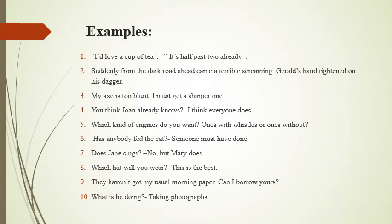Sentence three: 'My axe is too blunt. I must get a sharper one.' Here 'one' is acting as a linking word because it is referring to 'axe' which is blunt, so the person needs a sharper one. Since 'one' is a cohesive device, there is cohesion in the sentence. This 'one' is also anaphora, linking to something in the preceding text. Sentence four: 'You think John already knows? I think everyone does.' Because 'does' creates a link to what John knows, there is cohesion, and this 'does' is anaphora referring to the preceding text.